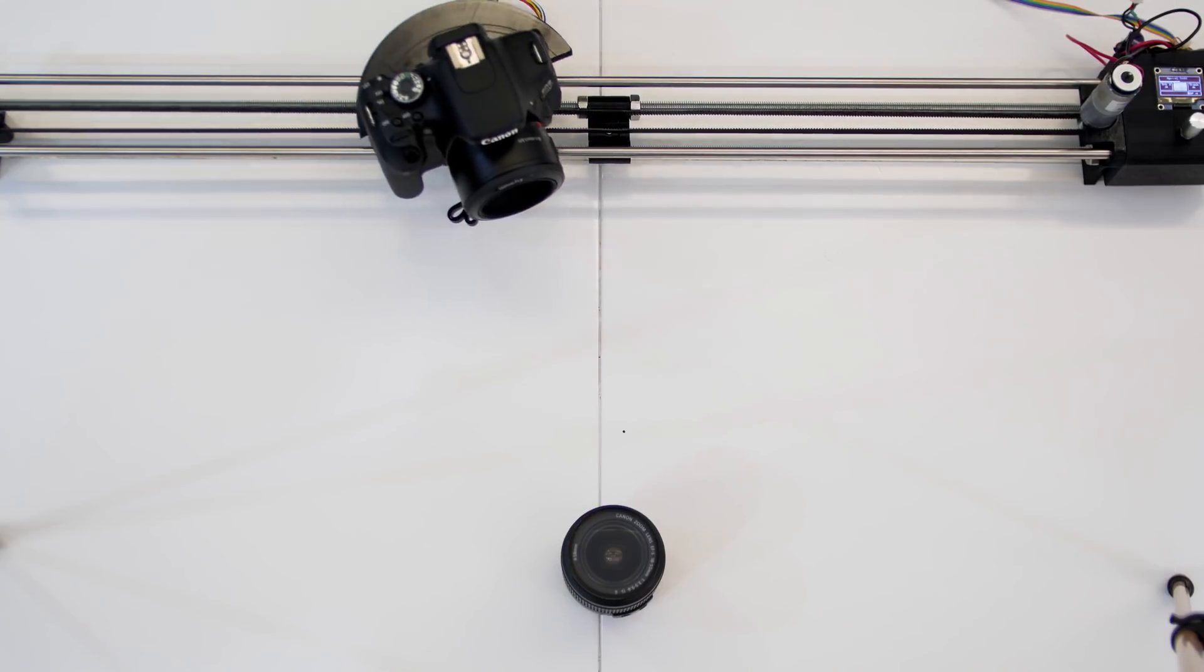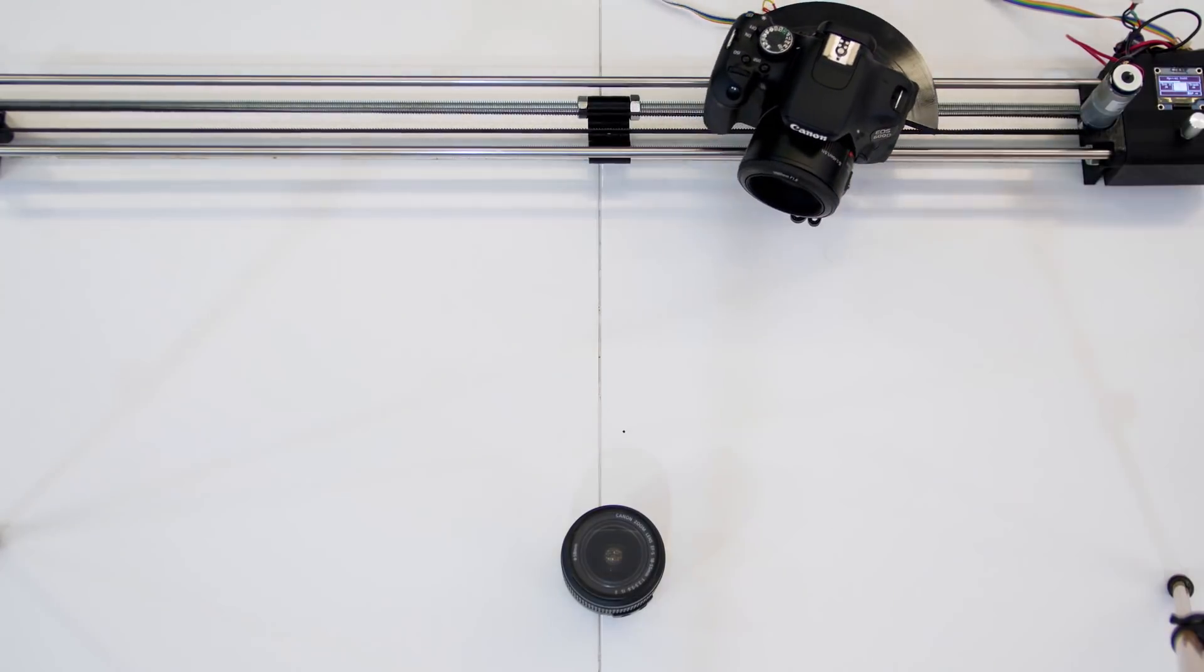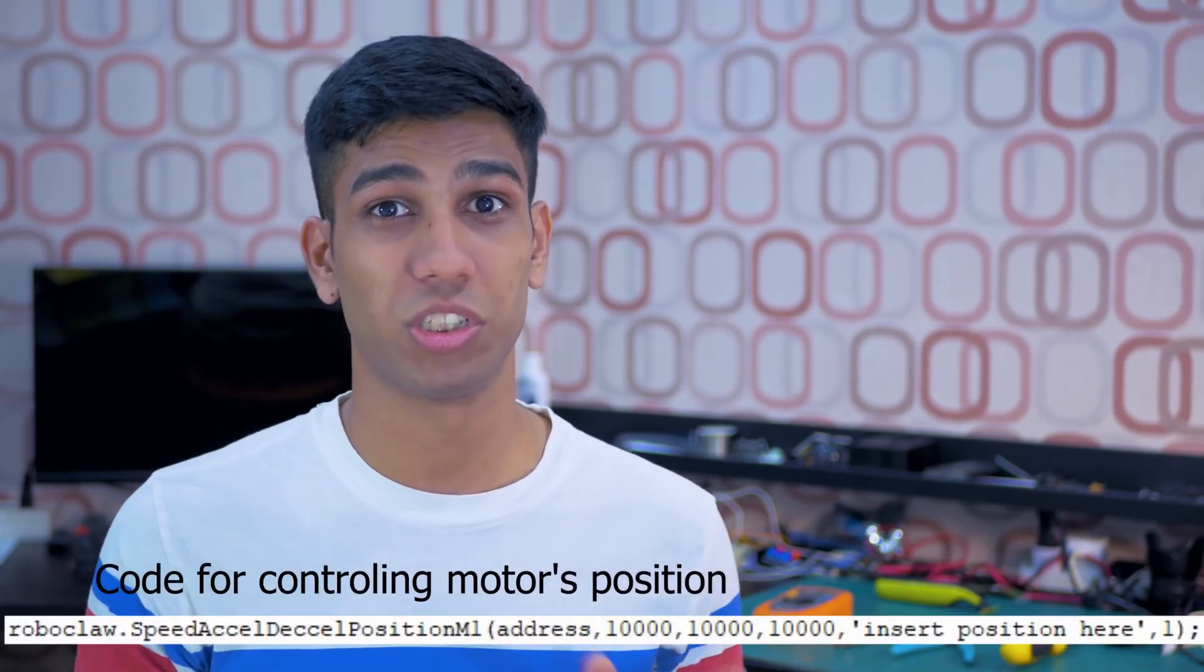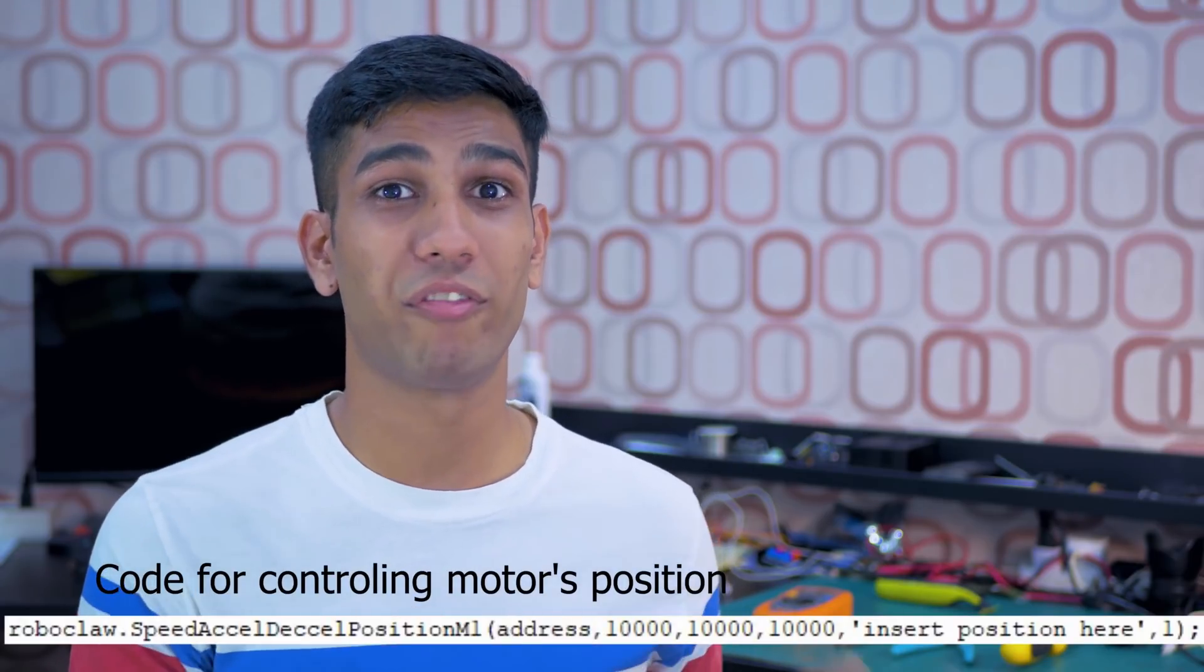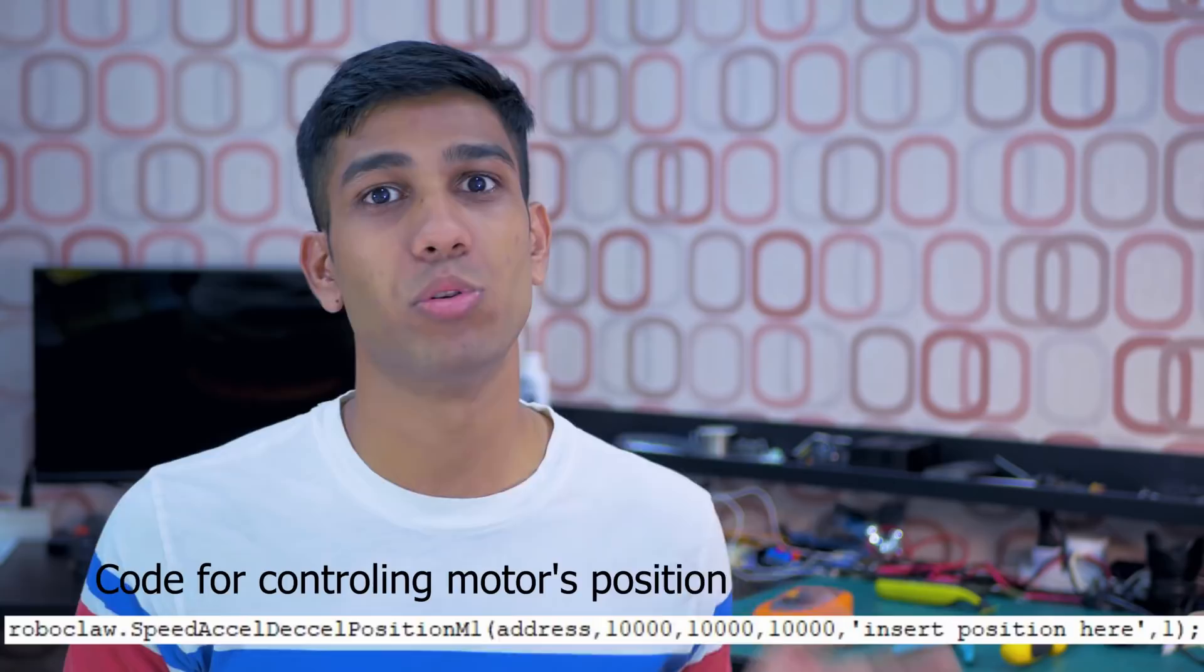This camera angle can be mapped into a positional value that the motor spins to. This is where the Roboclaw really shined for me. By giving the Roboclaw a motor positional value, the Roboclaw can effectively turn your DC brushed motor into a servo.